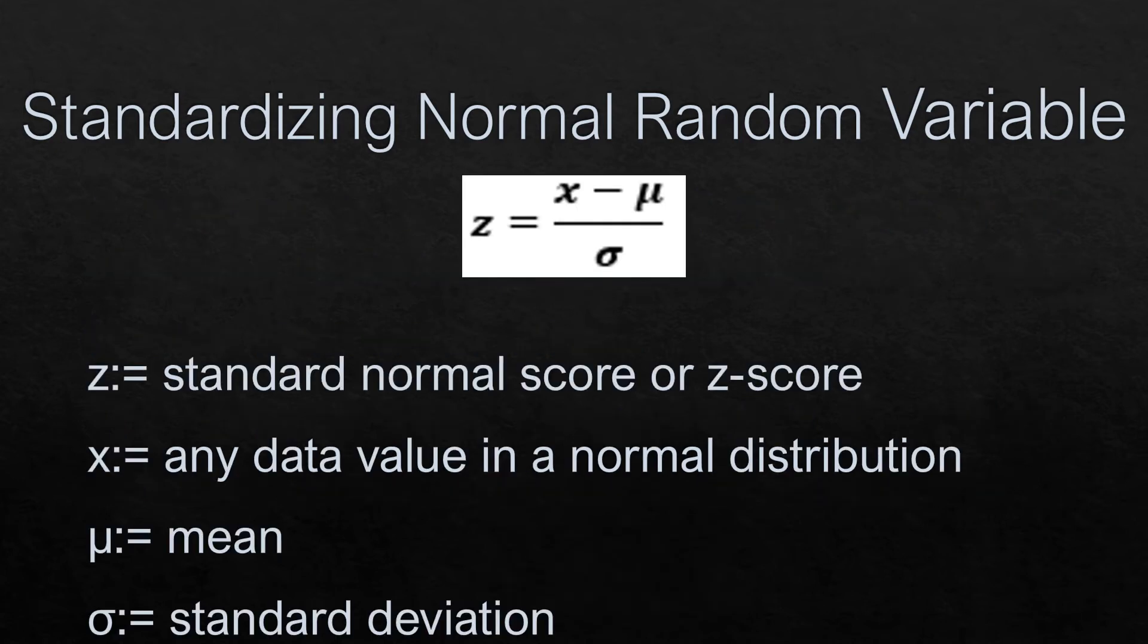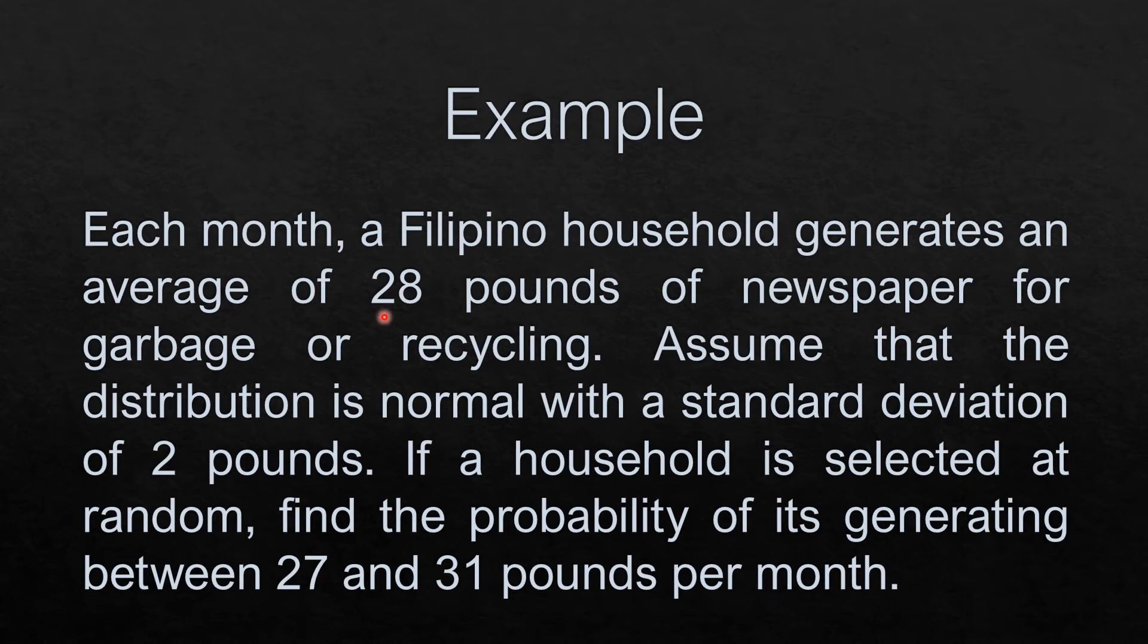We have the formula, and the question is, what is the meaning of the variables in this formula? We know that Z is the standard normal score, also known as the Z-score. X is any data value in a normal distribution, that is what we're going to transform. Mu is the mean, and sigma is the standard deviation.